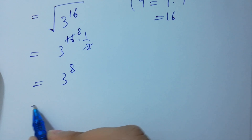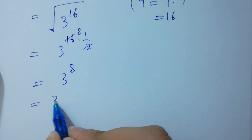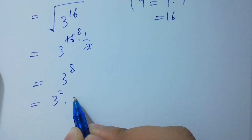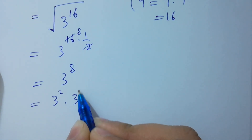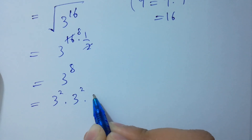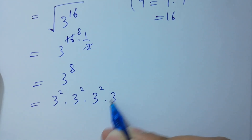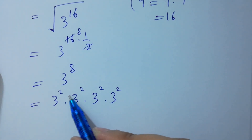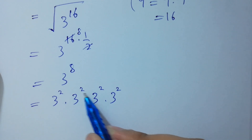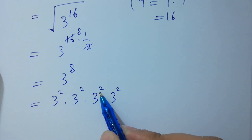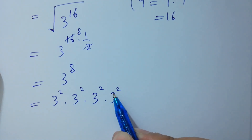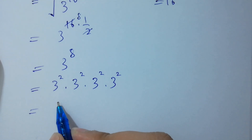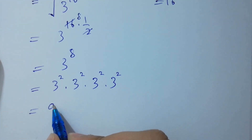3 to the power 8 is the same as 3 squared times 3 squared times 3 squared times 3 squared, since 2 plus 2 is 4, 4 plus 2 is 6, and 6 plus 2 is 8. And 3 squared is 9, so we have 9 times 9 times 9 times 9.